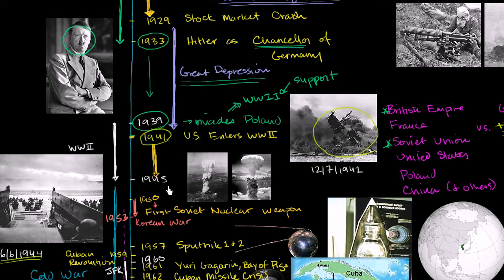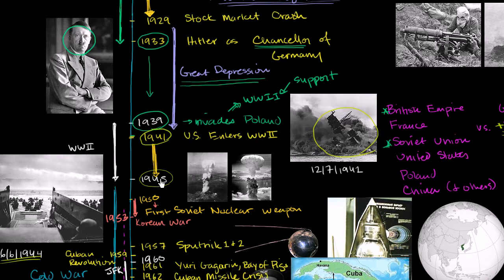Fast forward to 1945, and eventually — especially between the Soviet Union and all of the Allied forces — they were able to win the European front of World War II. Japan was still fighting pretty ferociously. So the US develops the atomic bomb, ignites one over Hiroshima, and then a few days later one over Nagasaki, and that essentially ends World War II.